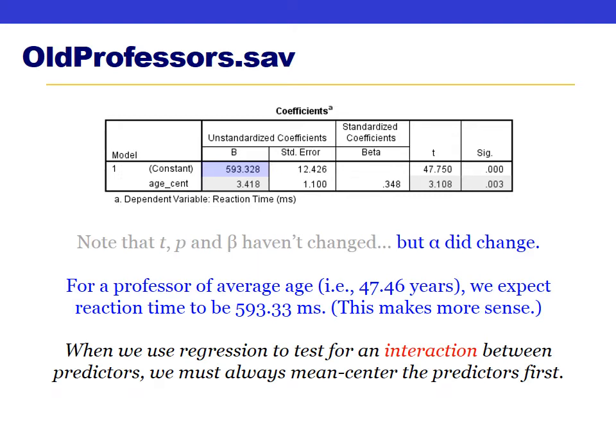We are now ready to start looking at interactions. Anytime we want to test an interaction, we must first dummy code our categorical predictor variable, then mean center our continuous predictor variable. Only after we've done those things are we ready to test for an interaction.